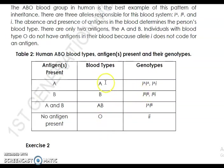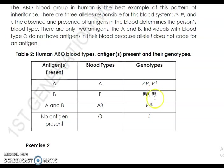For blood types and genotypes: blood type A has two possible genotypes — IA IA, or IA i. For blood type B, the genotypes are IB IB or IB i. For blood type AB, the genotype is IA IB. And for blood type O, the genotype is small letter i, small letter i.